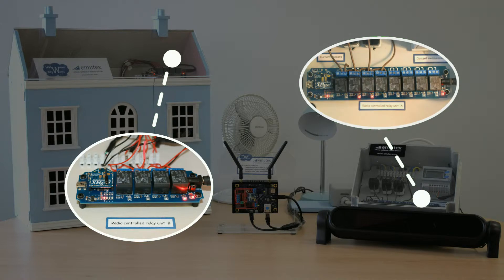Wirelessly controlled relay stations switch mains voltage using the Zigbee protocol via XBee shields. One of the relay boards controls the mains appliances powered by sockets on the outside, while the other relay controls the lights inside the doll's house.